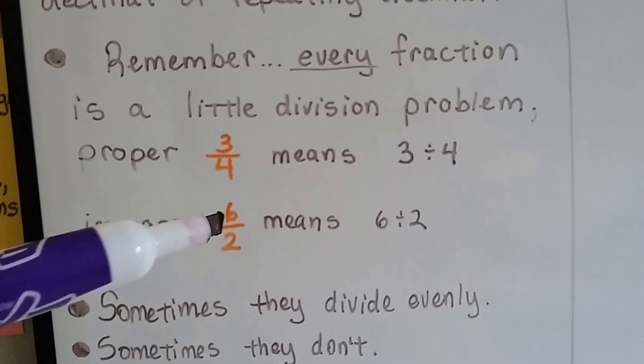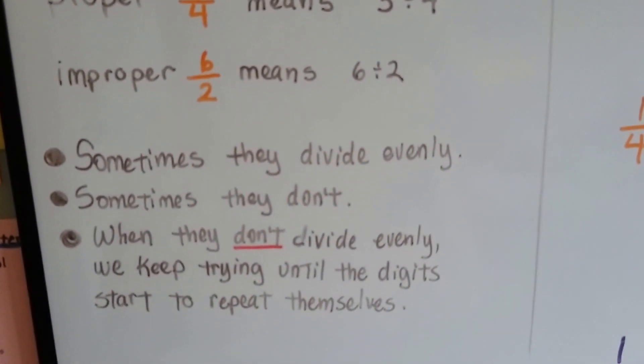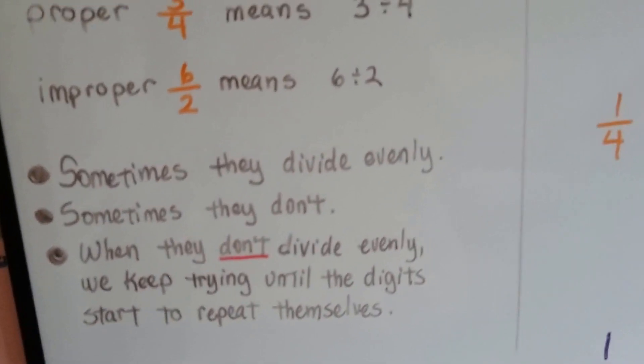We know that one equals 3, doesn't it? Well, sometimes they divide evenly and sometimes they don't. And when they don't divide evenly, we keep trying until the digits start to repeat themselves.